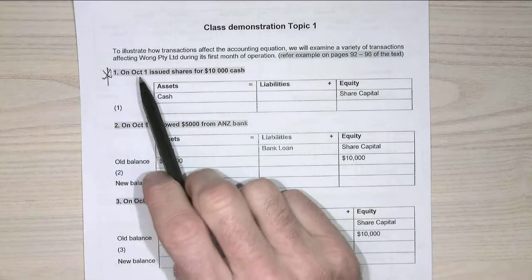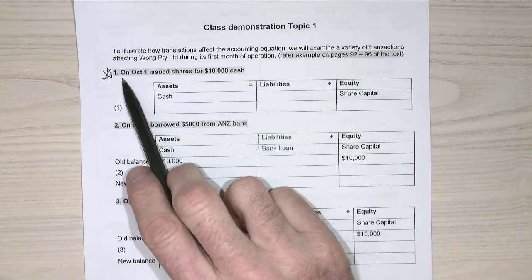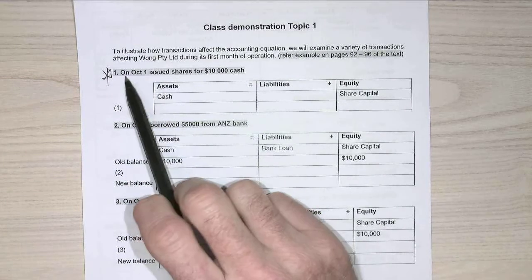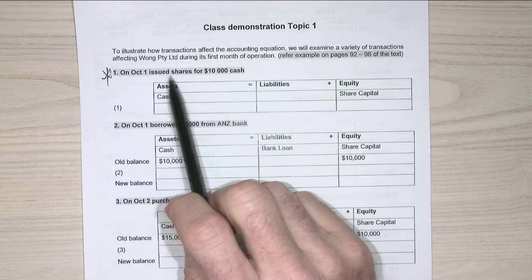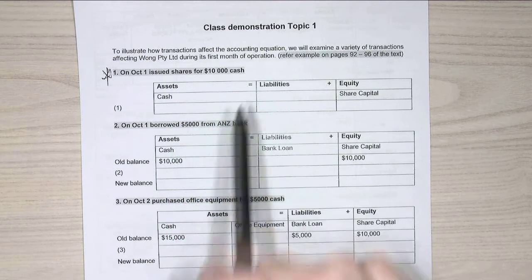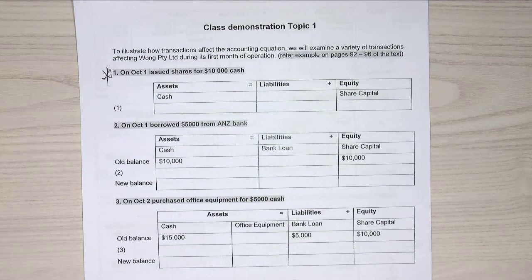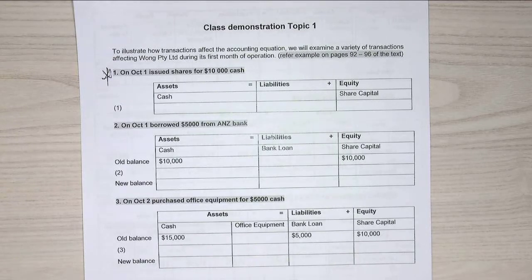My first transaction is on the 1st of October: issued shares for $10,000 cash. What's the two sides to my accounting transaction? What does it affect? Equity and assets. So it affects my cash and it affects my equity.